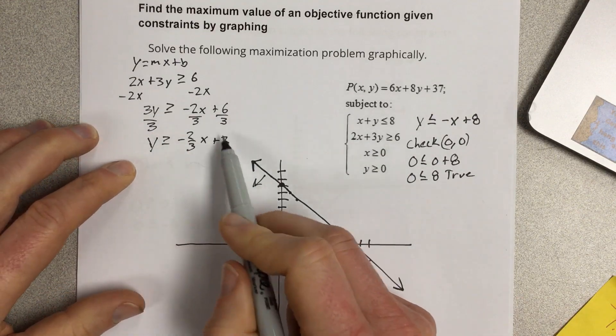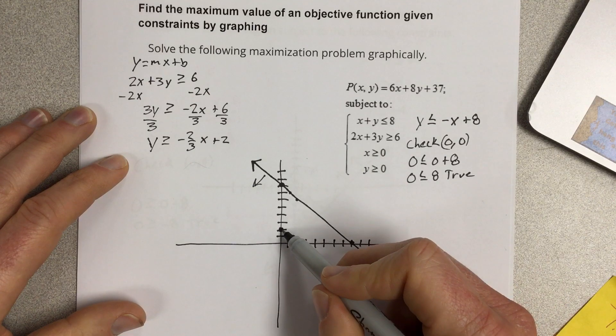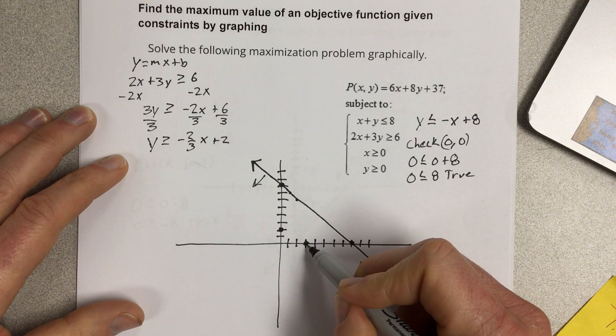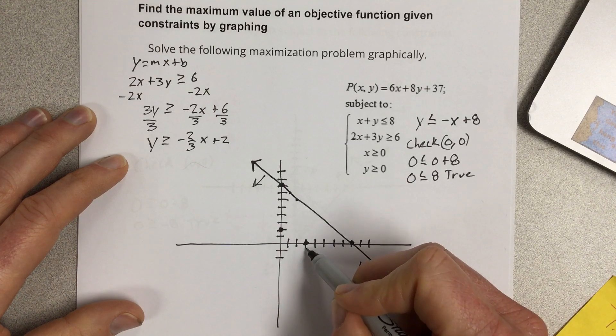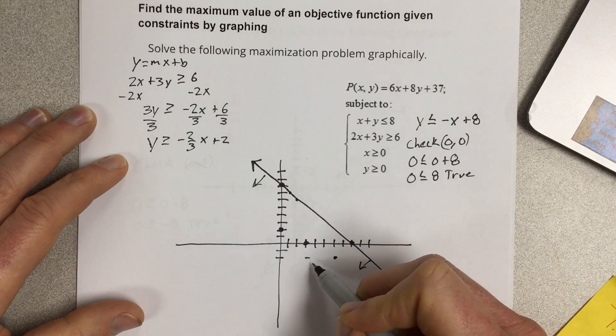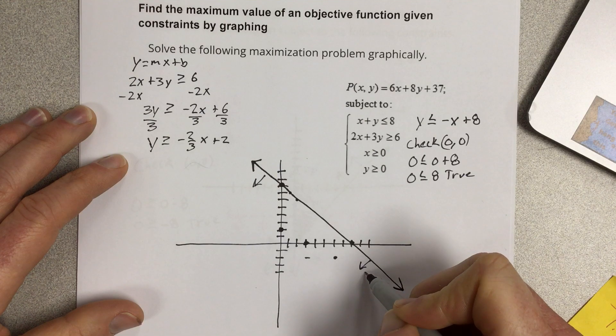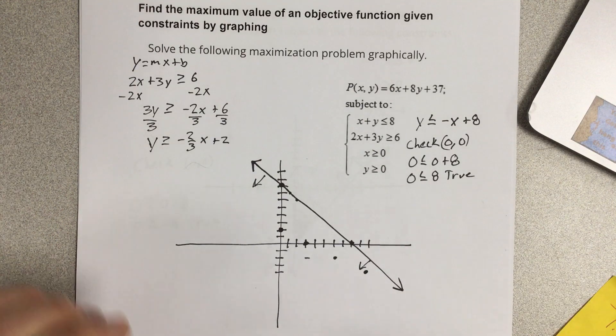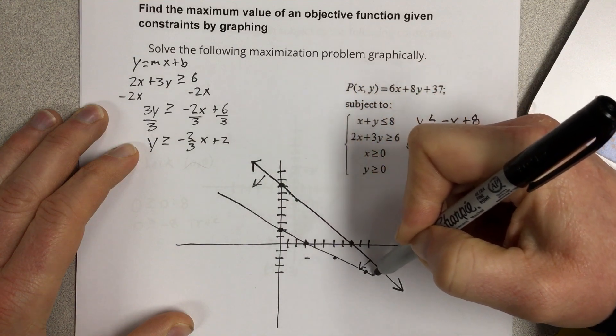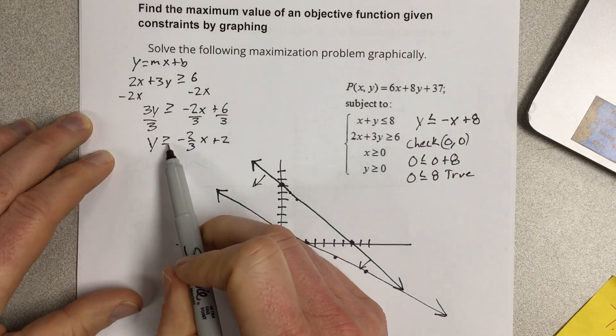So we're going to be shading in this direction. And then we're going to graph this one. We're going to go up to 2 and we're going to go down 2 over 3. So 1, 2 and 1, 2, 3. And we're going to do this over and over again. Down 2 over 3, down 2 over 3 more. And we're going to get this line right here.